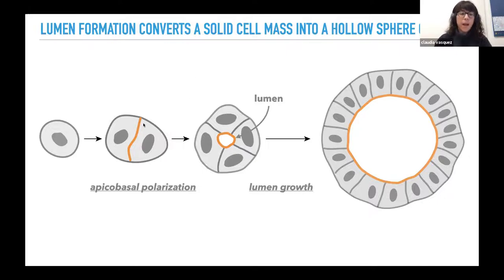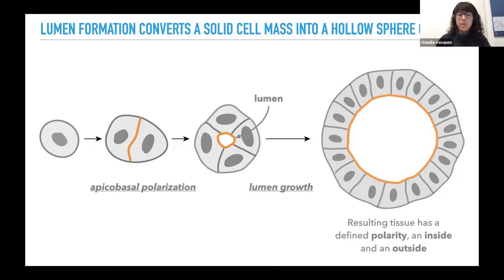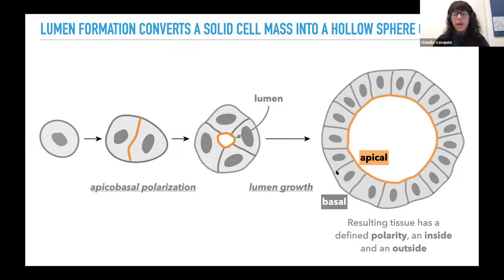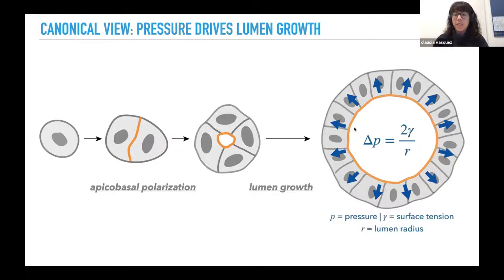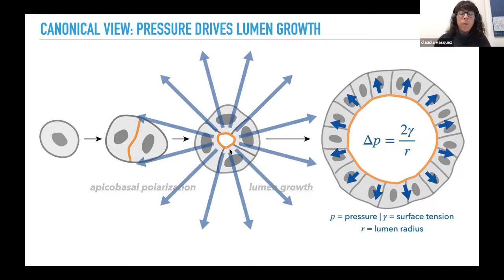To summarize this vast work: cells polarize to generate an apical surface that's distinct from their basal surface, indicated here in orange and gray respectively. These apical surfaces are molecularly distinct from their basal surfaces, resulting in the tissue having a defined polarity with an inside apical surface and an outside basal surface. The canonical view, just like in those embryos, is that lumens may grow via osmotic pressure, and this growth would be governed by the Young-Laplace equation, which dictates that the pressure difference between the cells and the lumen is proportional to the surface tension and inversely proportional to the lumen radius. When lumens are very small, if the surface tension stays the same, this pressure would be much higher.